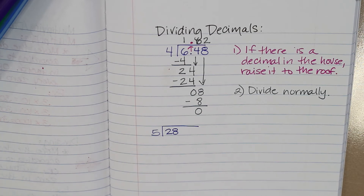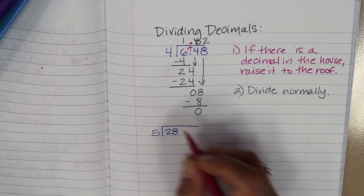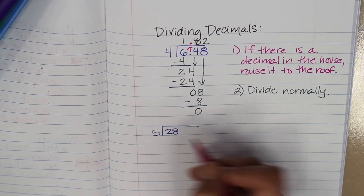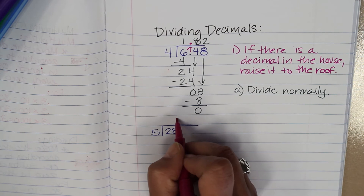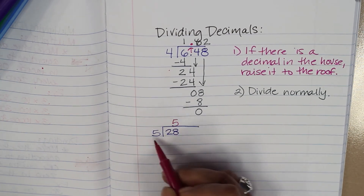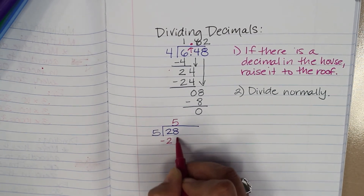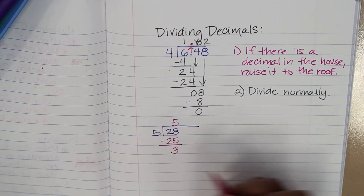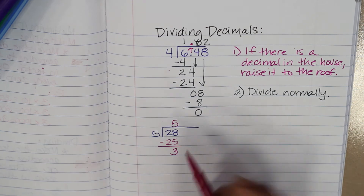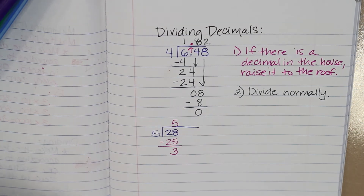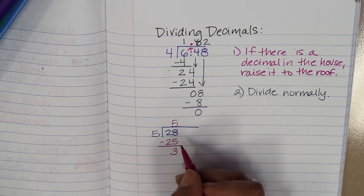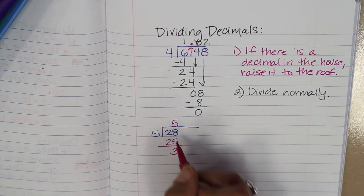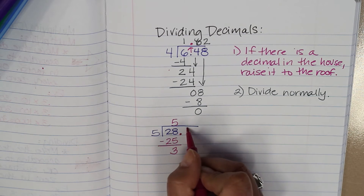The first thing I'm going to do is divide normally. So 28 divided by 5 — 5 goes into 28 five times. 5 times 5 is 25, so I'll subtract, and 8 minus 5 is 3. Now I have a remainder, but I want to make this number so it doesn't have one. So I'm actually going to change this number without changing the number — I'm going to put a decimal and a zero.